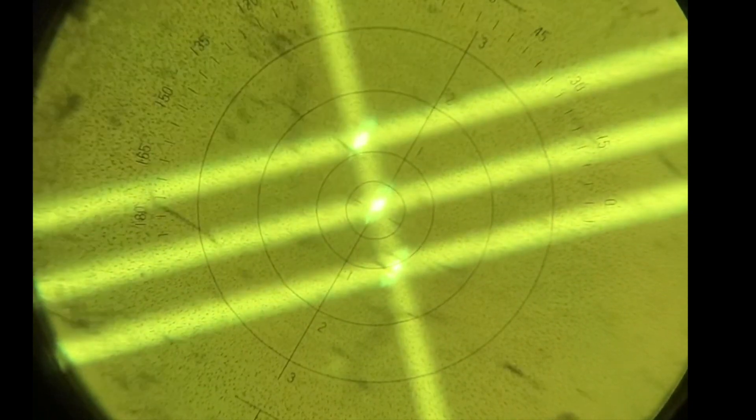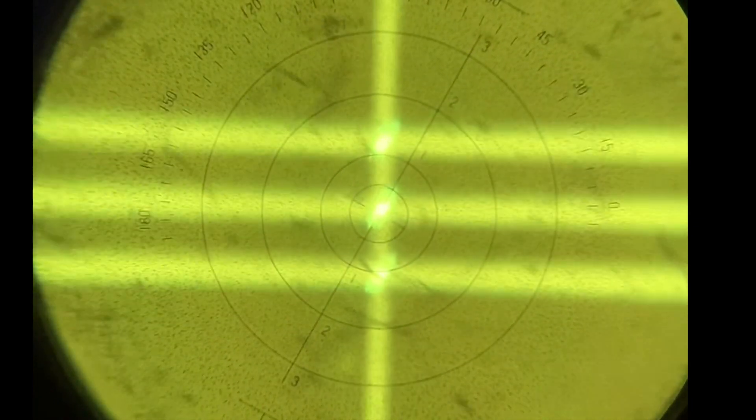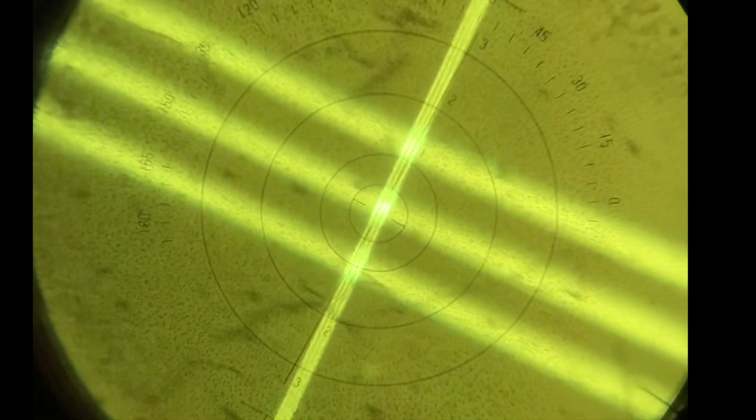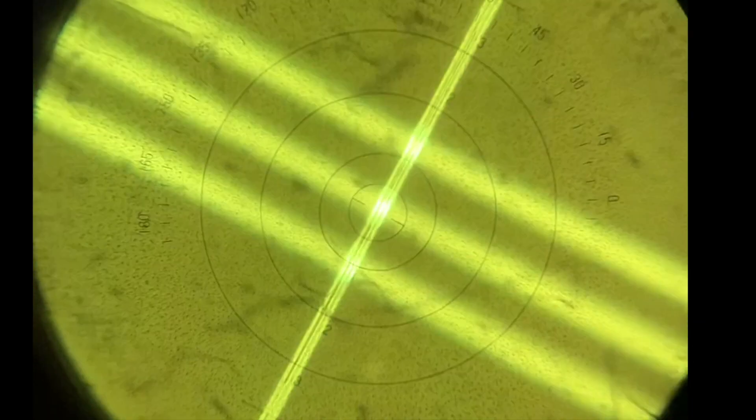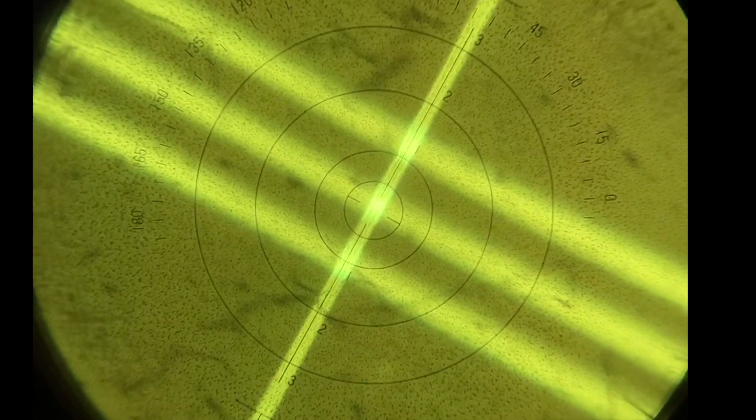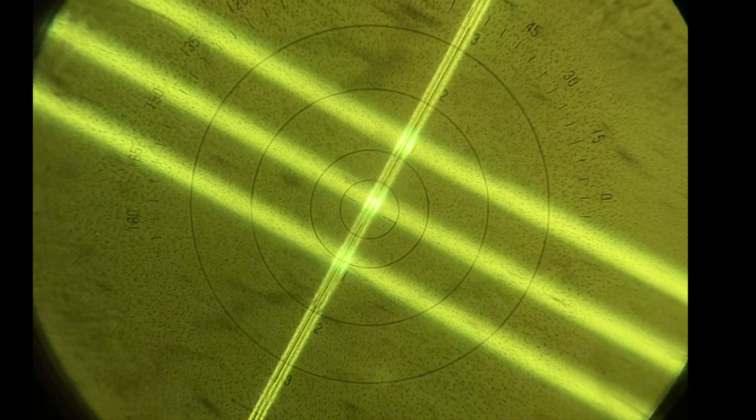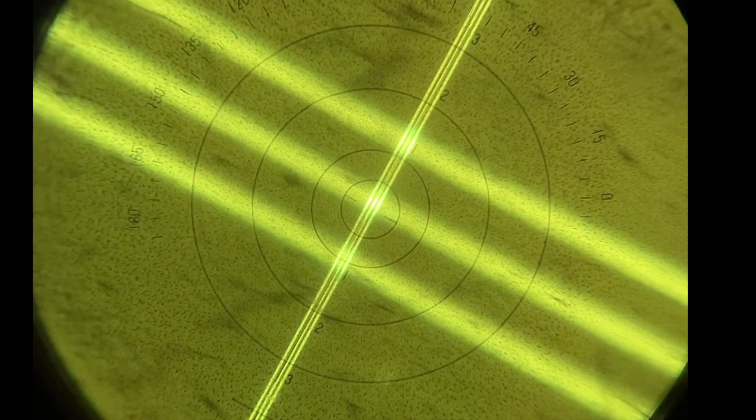Recall when looking at an optical cross, we are looking at the two principal meridians of a sphero cylinder lens. Therefore, in manual lensometry, we can measure prescriptions in both plus and minus cylinder.